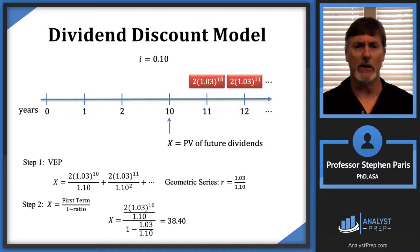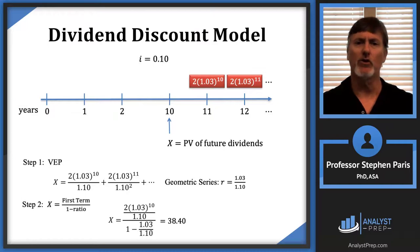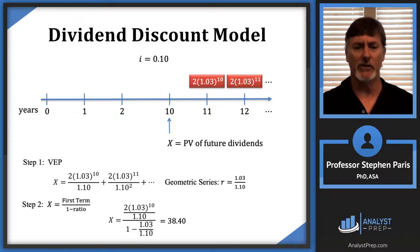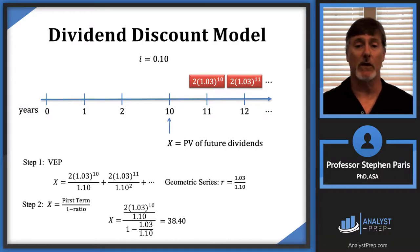The dividend discount model just means take the dividends, apply whatever pattern they tell you — in this problem they're forming a geometric progression — and then take the present value of those dividends. That gives you the theoretical price of the stock. That's all the dividend discount model is.